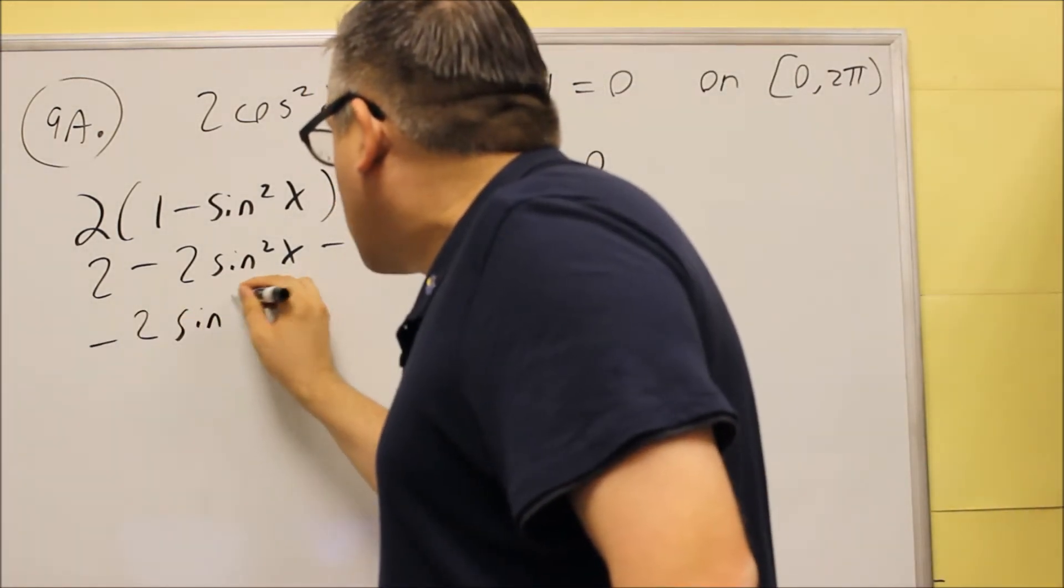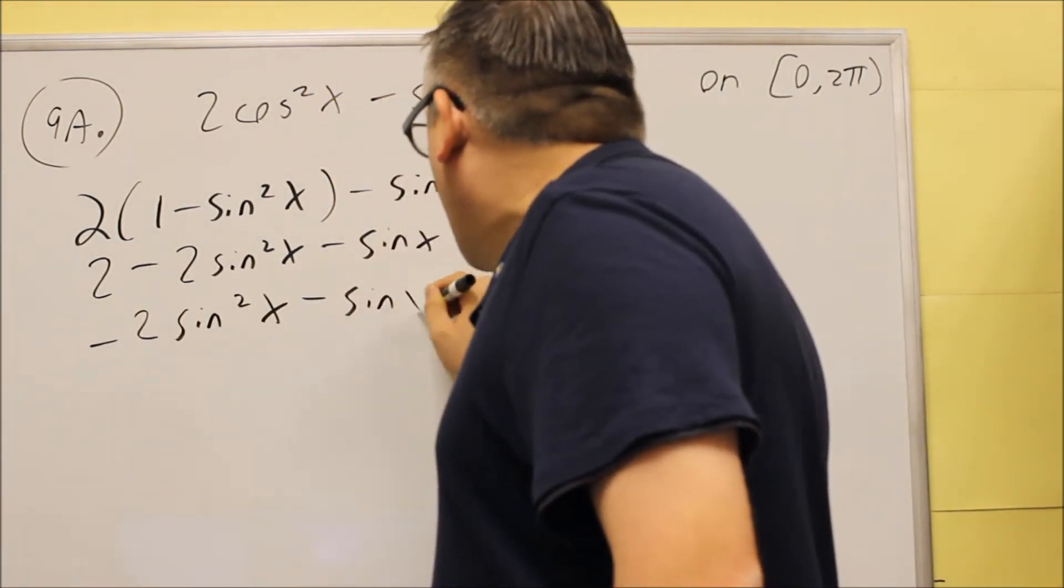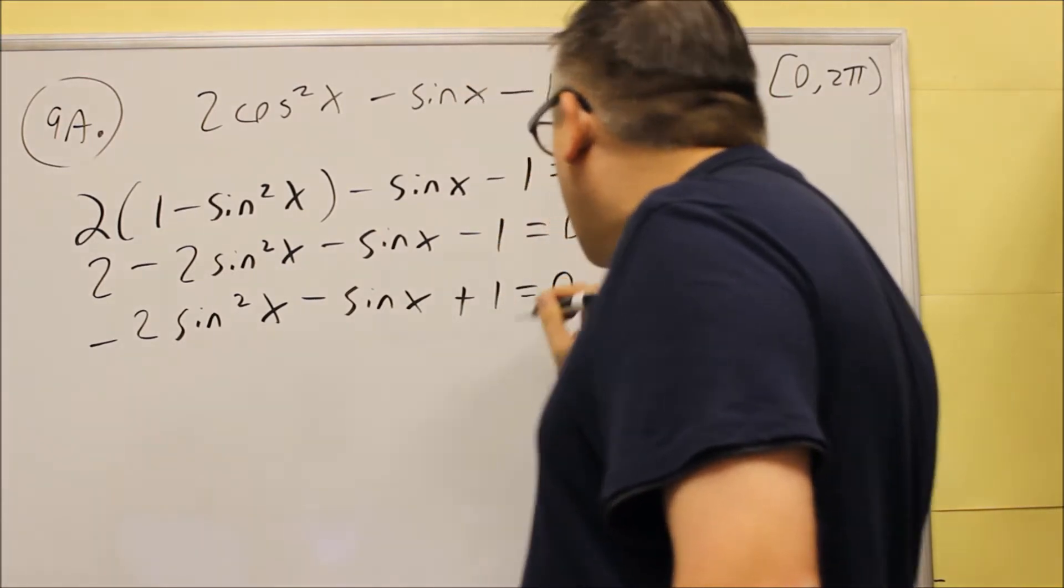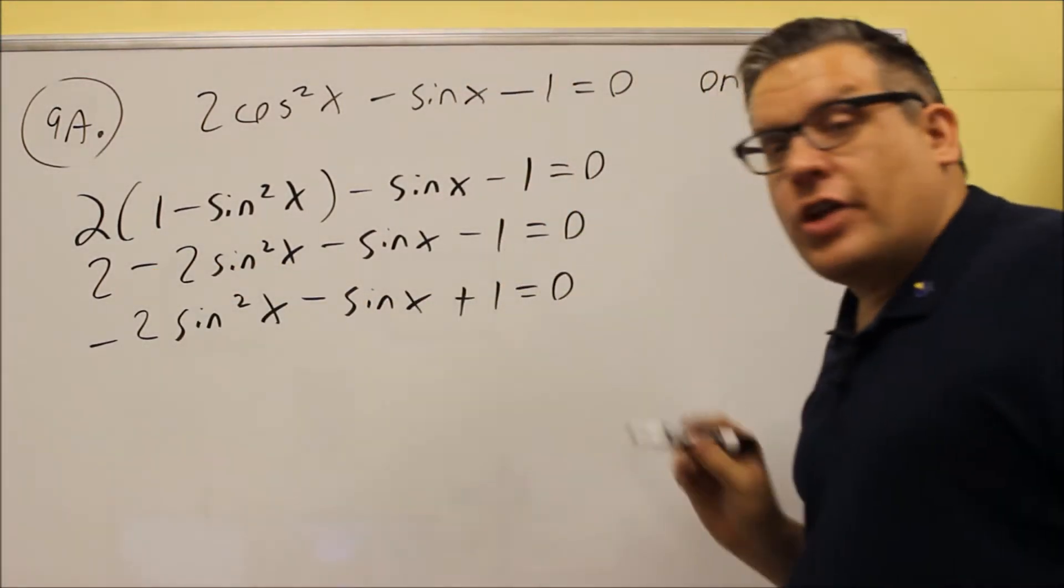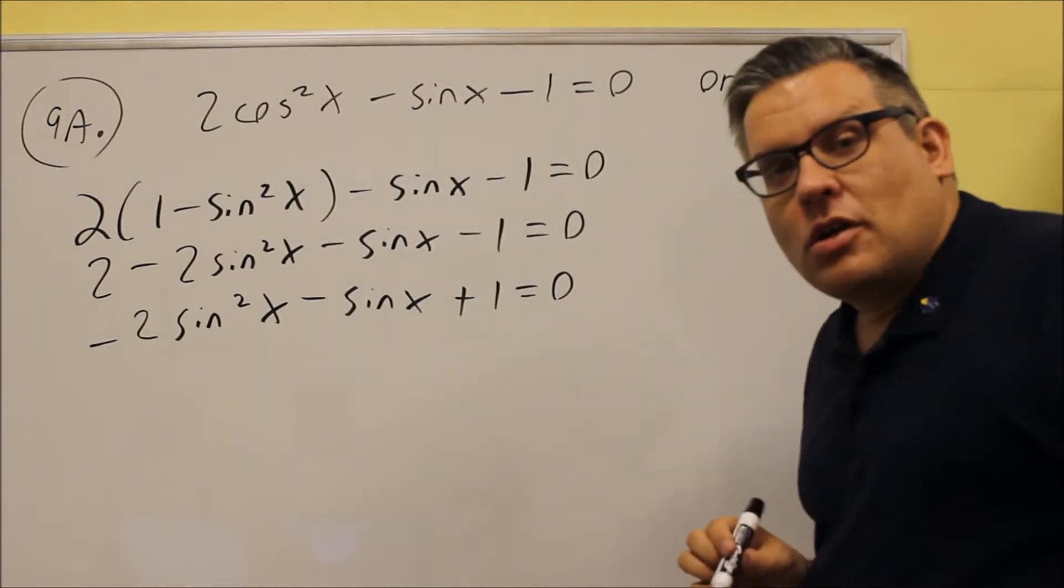So if we combine those together, the next line down, we're going to have a plus 1 on the end, because we combine the 2 and the negative 1 together to get the positive 1.